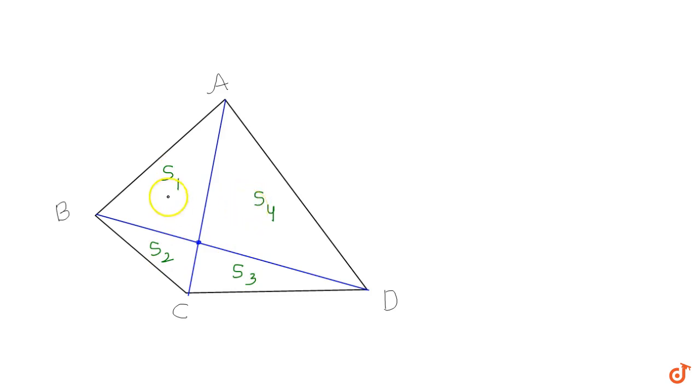Now we will try to determine some relation between S1, S2, S3, and S4. To write the areas, I'll make some construction. From point A, I draw a perpendicular to length BD. Similarly, from C I draw a perpendicular to BD.